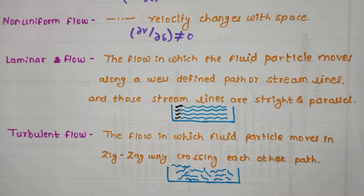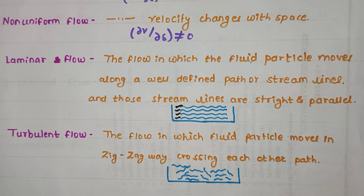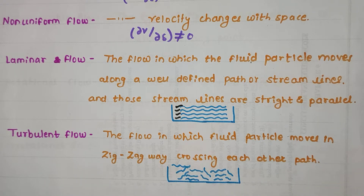Turbulent flow is the flow in which fluid particles move in a zigzag way and they cross each other. As you can see in the diagram, the paths are in a zigzag manner and they are crossing each other. This type of flow is called turbulent flow.